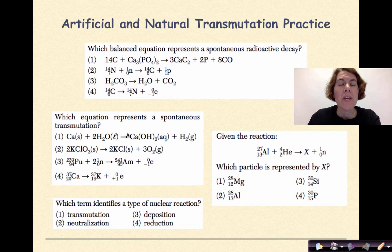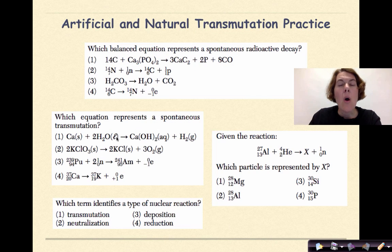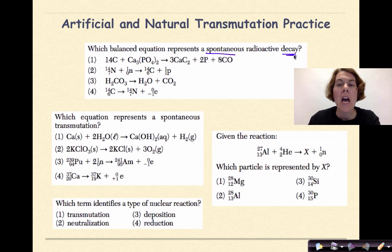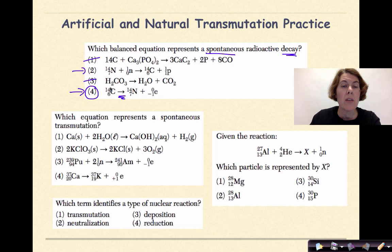Let's do some practice. First question: which balanced equation represents a spontaneous radioactive decay? The keyword is 'decay.' Options one and three are chemical reactions, so they're out. That leaves two and four. Option two is artificial transmutation because it has a target nucleus and a particle. The answer is four: carbon-14 undergoes spontaneous decay, forming nitrogen-14 and releasing a beta particle.